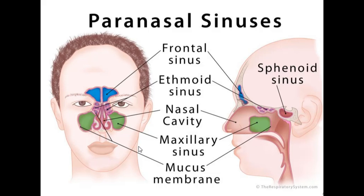The maxillary sinus is shown here in green. It lies in the bone of the maxilla. Importantly, it is the largest of all the sinuses — you can see it in the anterior view and the lateral view, and you can see how large it is. It is pyramidal in shape, so any sinus that is pyramidal in shape is the maxillary sinus.